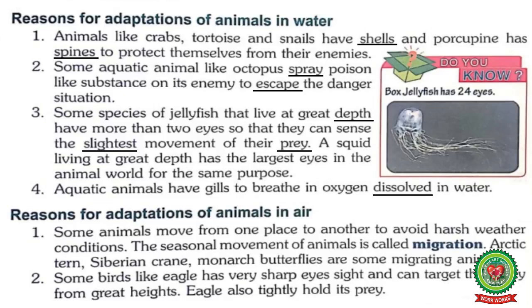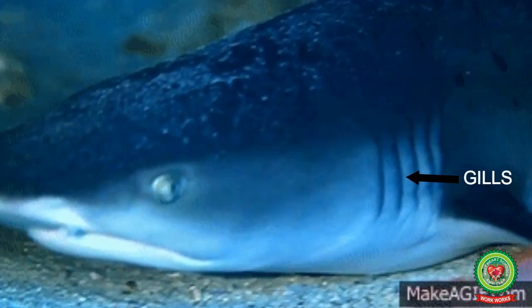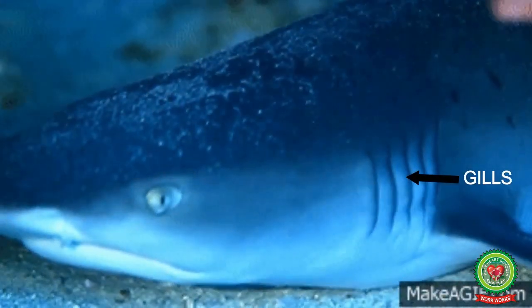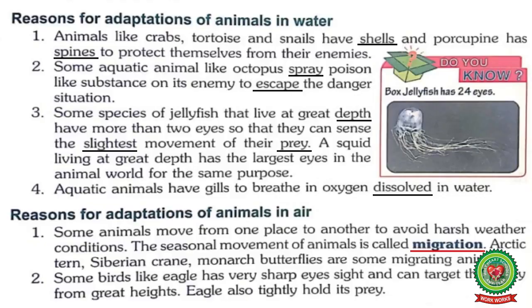Number four: aquatic animals have gills to breathe in oxygen dissolved in water. Underline the word 'dissolved' and write down its meaning: mixed. Animals living in water breathe through gills.